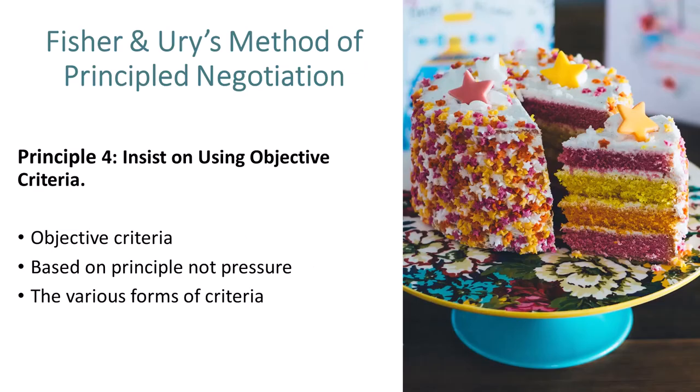Fourth, Fisher and Urey say that effective negotiation requires that objective criteria be used to settle different interests. This helps the solution seem wise and fair. The goal in negotiation is to reach a solution based on principle, not on pressure, and criteria helps that. Criteria can come in multiple forms: precedent, professional standards, what a court would decide, moral standards, tradition (meaning established practices), and scientific judgment. One example is fair procedure — parents might use a forced choice technique for siblings fighting over cake slices: one sibling cuts the pieces and the other gets first choice of which slice to take. Interestingly, this technique was used by the United Nations in law of the sea negotiations over deep seabed mining.